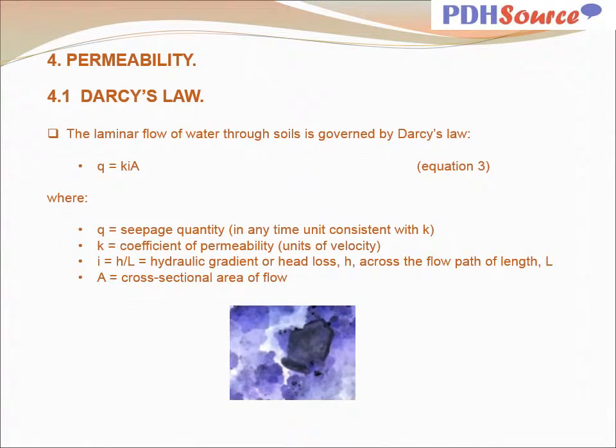With regard to permeability, Darcy's law is the key indicator. The laminar flow of water through soils is governed by Darcy's law — equation 3: Q = KIA, where Q is the seepage quantity in any time unit consistent with K; K is the coefficient of permeability in units of velocity; I equals H divided by L, the hydraulic gradient or head loss H across the flow path of length L; and A is the cross-sectional area of flow.